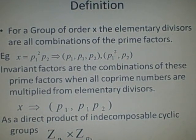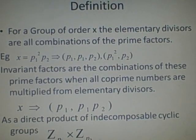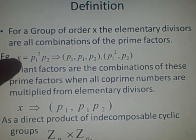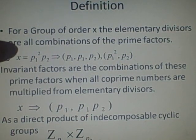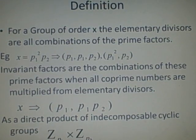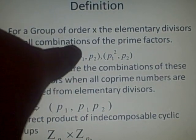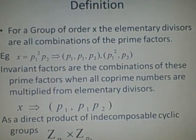For a group of order x, the elementary divisors are all combinations of the prime factors. So if we have the order x here, and the prime factors are p1 squared and p2, then the elementary divisors are, in brackets, p1, p2, and p1 squared, p2.